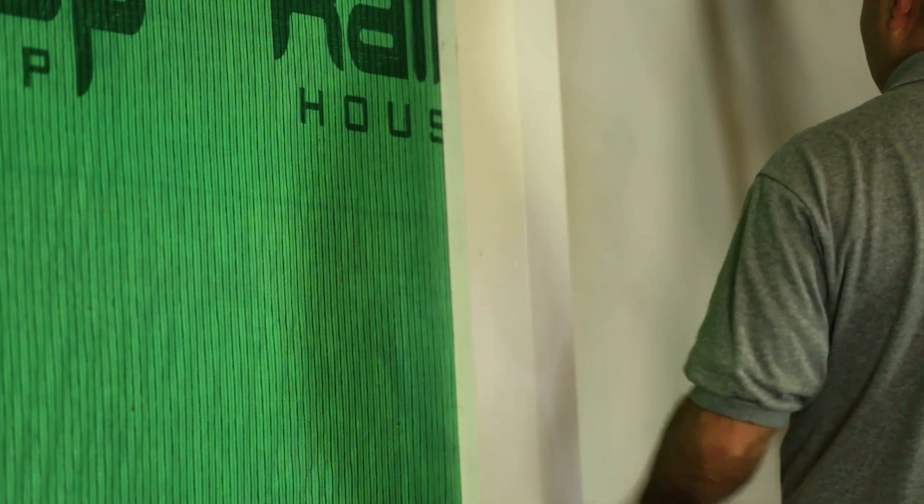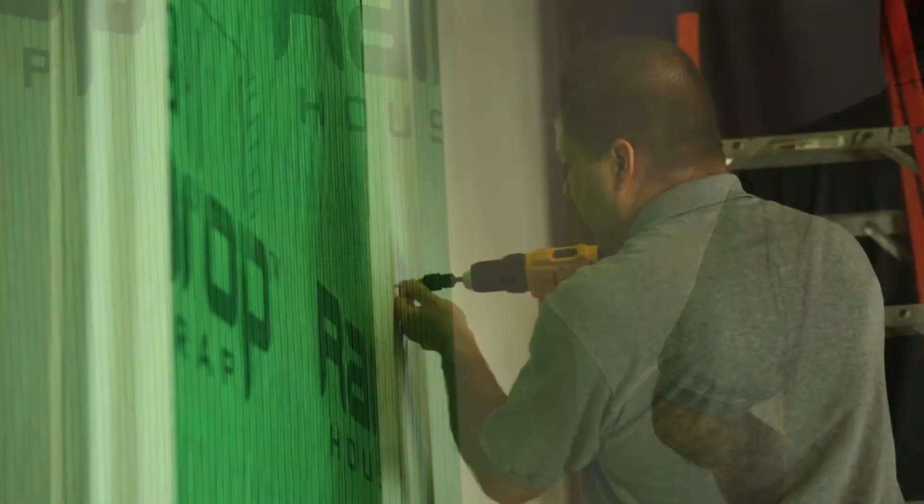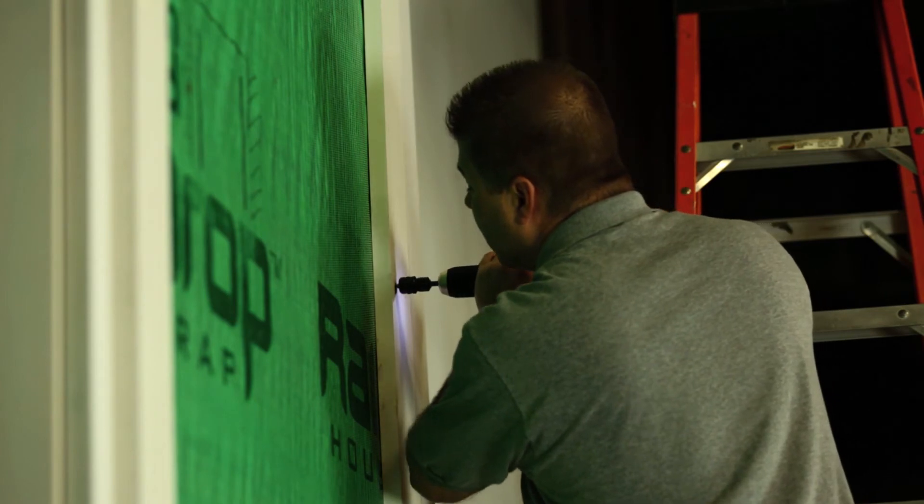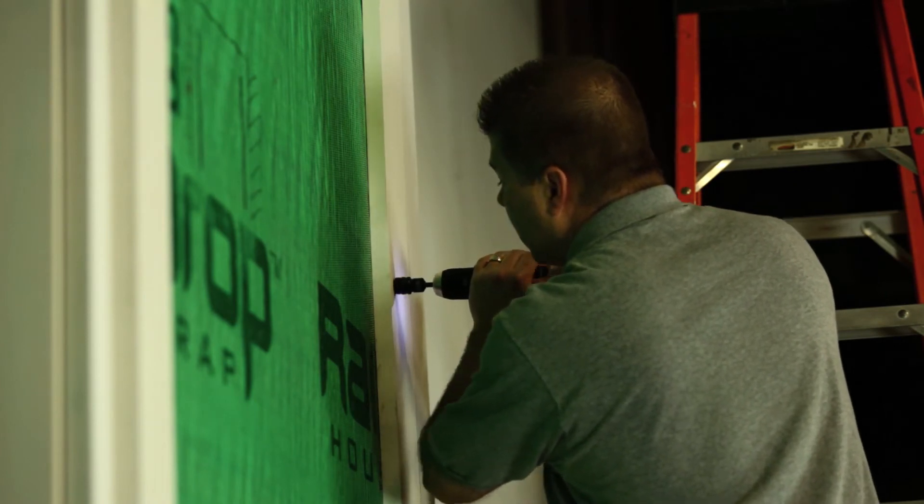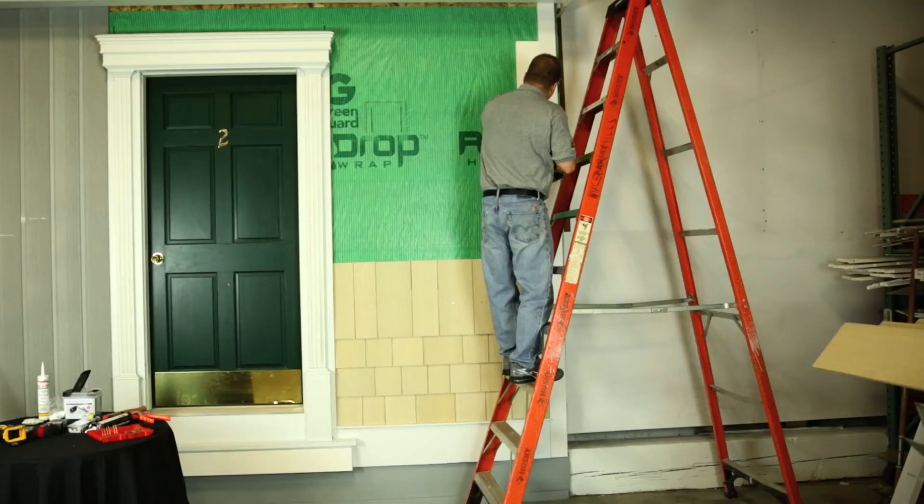You may nail within 1.5 inches of the edge of the board to capture jams, but this is not recommended at the very end of the boards. The board should be fastened within 2 inches of the end of the board.